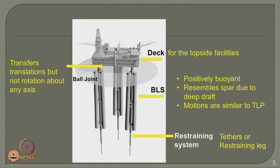The effective characteristics of the buoyant leg structure are as follows: it is a positive buoyant system, meaning the stability of these platforms is much larger and safer compared to other platforms. Buoyant leg structure essentially resembles a spar due to its deep draft configuration. However, if you look at its motions, they are similar to that of a tension leg platform. So one can say that buoyant leg structure is a hybrid combination of two classical deep water structural systems — namely spar and TLP. These buoyant leg structures are connected to the deck using a special arrangement called a ball joint.